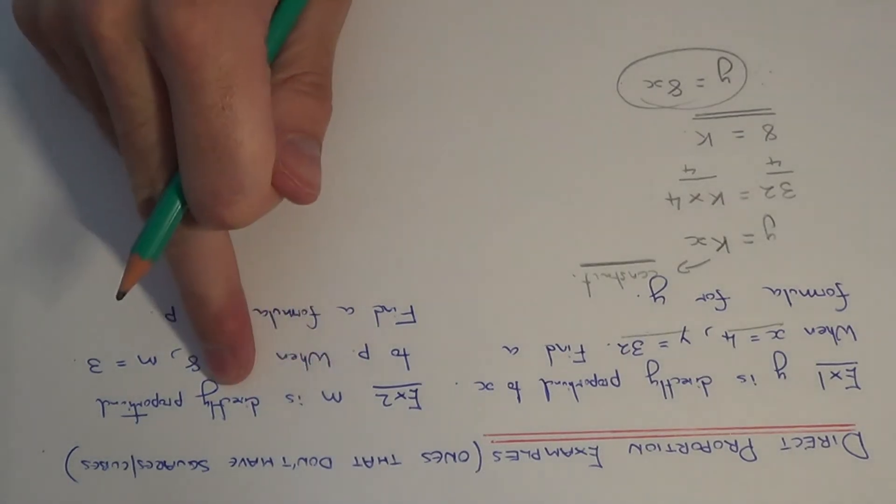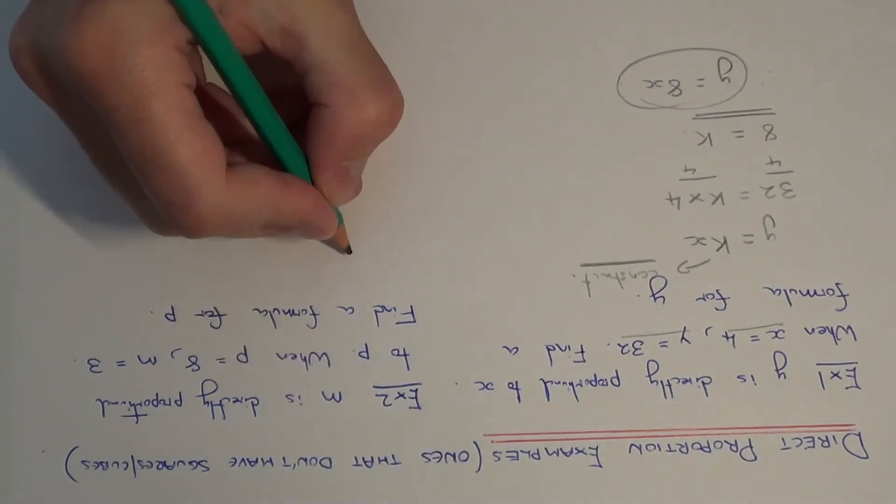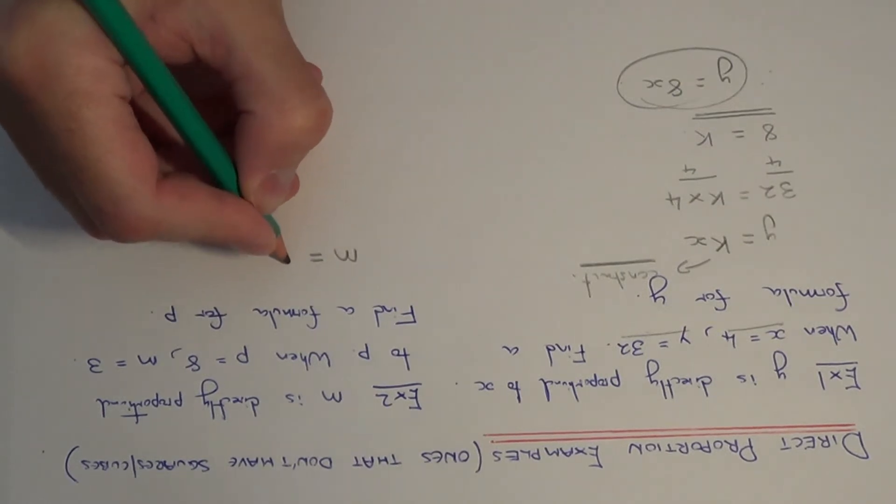So again it's directly proportional to, so this means our formula will take the shape m equals k times p.